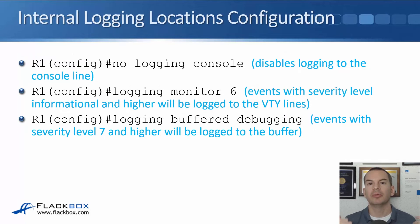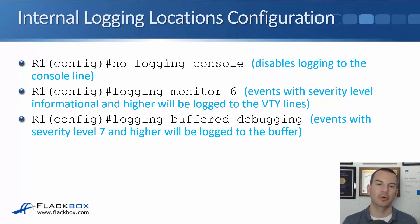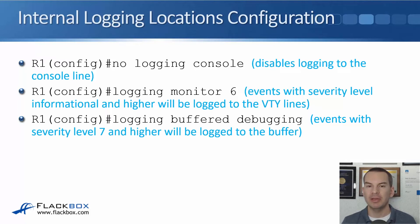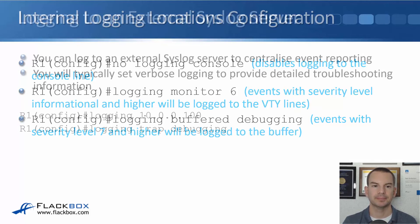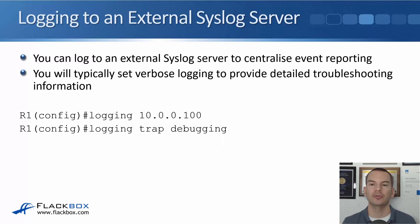Let's look at how to configure this. Logging to the console is on by default; to disable it use 'no logging console' at global config. For logging to the VTY lines for Telnet and SSH connections, use 'logging monitor' and set the level — for example, 'logging monitor 6' means level six, informational, and everything informational and higher will show up in your CLI when logged in via Telnet or SSH. For the RAM buffer, use 'logging buffered debugging', which logs everything at level seven and higher.